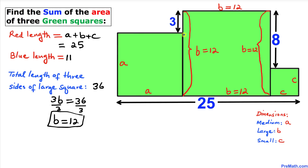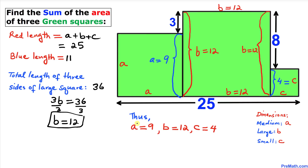Once we figure out b is 12, we can find the other side lengths. Side length a is 12 minus 3, which equals 9. Side length c is 12 minus 8, which equals 4. So side length a is 9, side length b is 12, and side length c is 4.